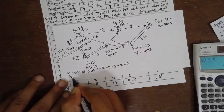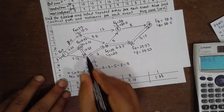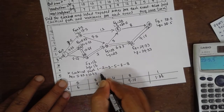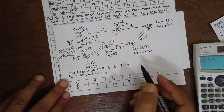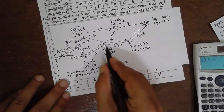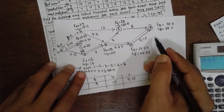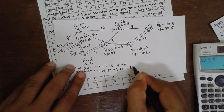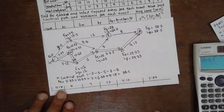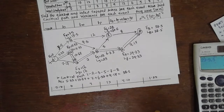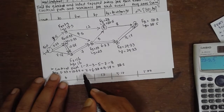We find the TE (expected duration) along the critical path. 1-2 = 5.33, 2-3 = 10.67, 3-5 = 7, 5-7 = 6.33, 7-8 = 9.17. Adding these gives 38.5. Write the units as days, events, or weeks accordingly.